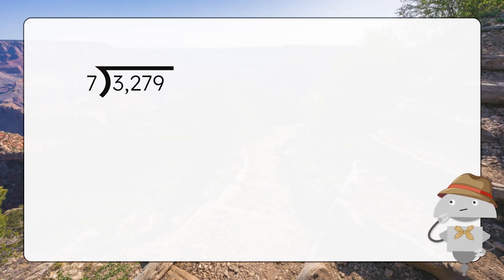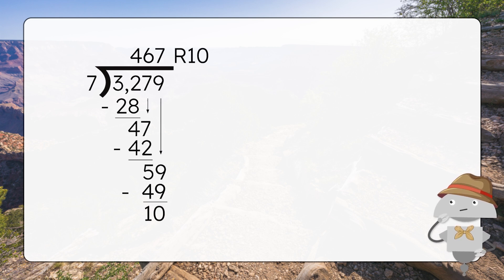Here's another example to practice representing a remainder as a fraction and checking our work using multiplication. Mia divided 3,279 by 7 and got a quotient of 467, remainder 10. Let's check out our work. Huh. There aren't any more digits of the dividend to bring down, but we should be able to take another group of 7 out of 10. The remainder can't be larger than the divisor, right? So that means Mia must have made an error in a work somewhere.